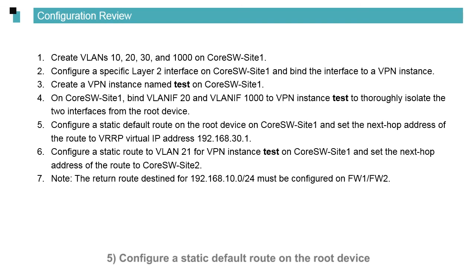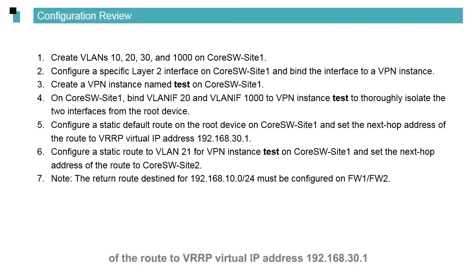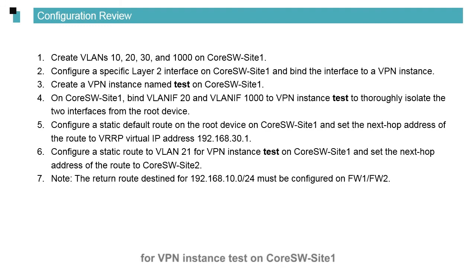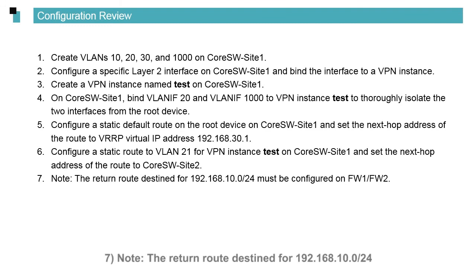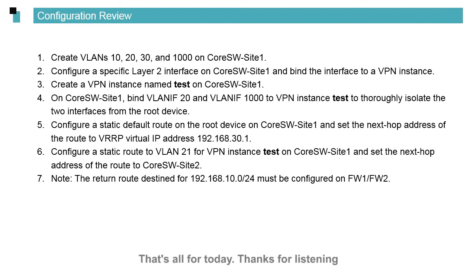Continuing the configuration: (5) Configure a static default route on the root device on CoreSW Site1. (6) Configure a static route to VLAN21 for VPN instance 'test' on CoreSW Site1, setting the next hop address to CoreSW Site2. (7) Note that the return route destined for 192.168.10.0/24 must be configured on FW1 and FW2. That's all for today. Thanks for listening.